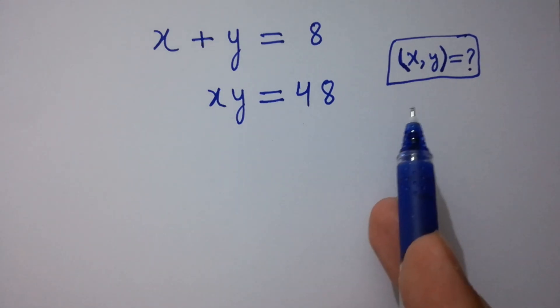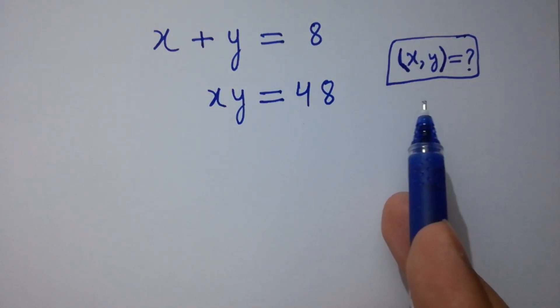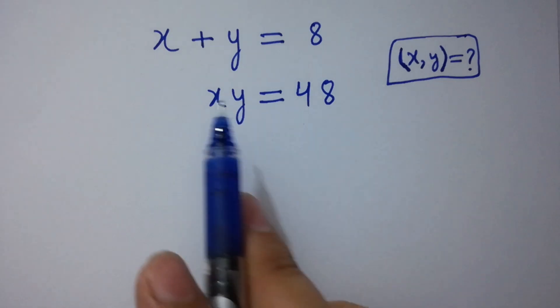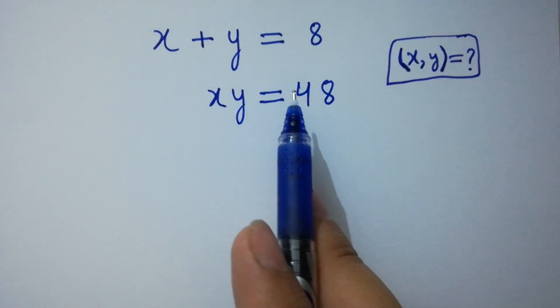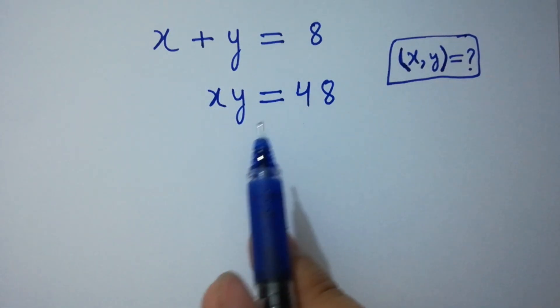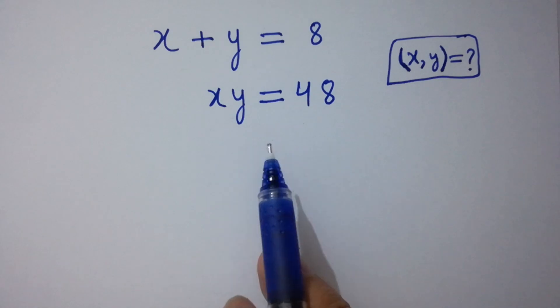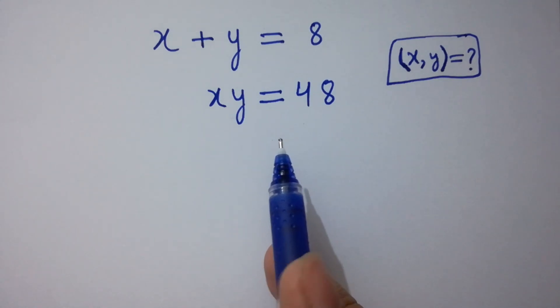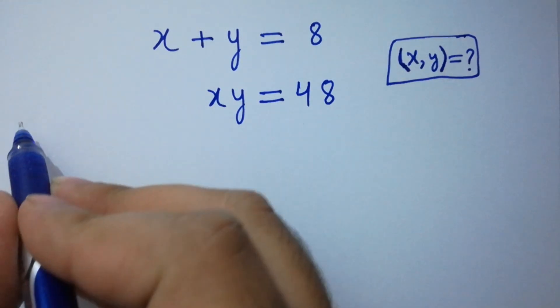Hello friends. Find the value of x and y if x plus y equals 8 and x times y equals 48. Let's have a solution.